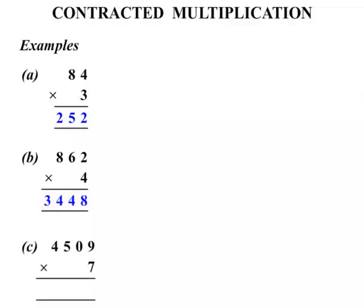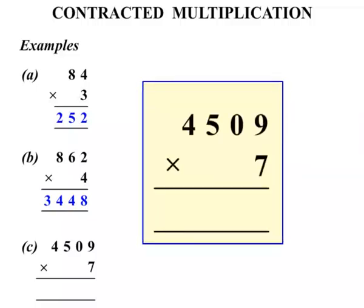The next one. 4,509 times 7. Okay again always look to make sure that it is times. If there was a plus sign there it would be completely different wouldn't it. But it is times in this lesson.